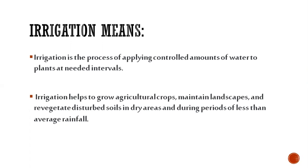Irrigation helps to grow agricultural crops, maintain landscapes and revegetate disturbed soils in dry areas and during periods of less than average rainfall. So irrigation is simply when you supply water to your crops or to your fields.